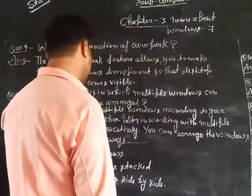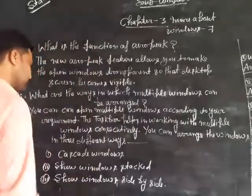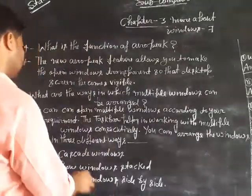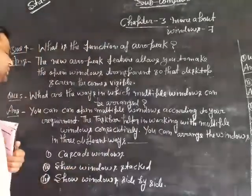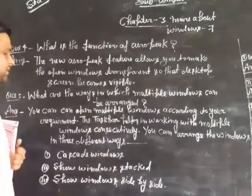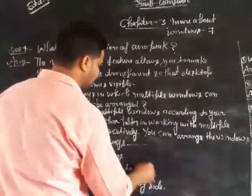You can arrange windows in three ways: Cascade the windows, show the windows stacked, and show the windows side by side. These are the three ways to arrange multiple windows.